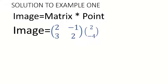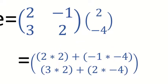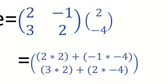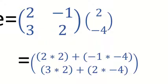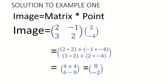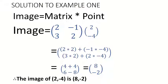The image we are looking for is [2, -1; 3, 2] multiplied by the point [2; -4]. Multiplying row by column: first row times the column gives 2×2 + (−1)×(−4) = 4 + 4 = 8, and second row gives 3×2 + 2×(−4) = 6 − 8 = −2. Therefore the image of (2, −4) is (8, −2).